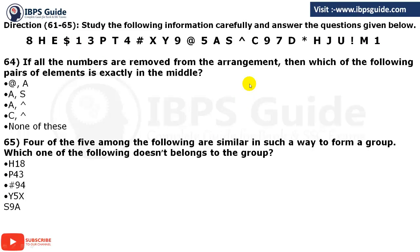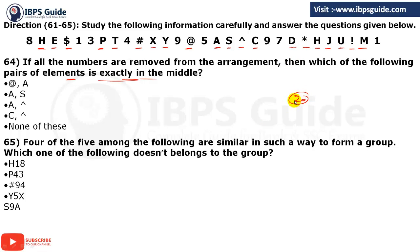Questions 64 and 65. Q64: If all numbers are removed from the arrangement, which pair is exactly in the middle? After removing numbers, 20 elements remain. To find the exact middle pair, we leave 9 elements on each side, giving us 2 elements in the middle. Counting from the start and leaving 9, our answer is A and S — option B. Q65: Four of five are similar — find the odd one out. Between H and 1 there are two elements; but between P and 4 there is only one element. Checking hash and 9: two elements between them. So the odd one out is P, 4, 3 — option 2.